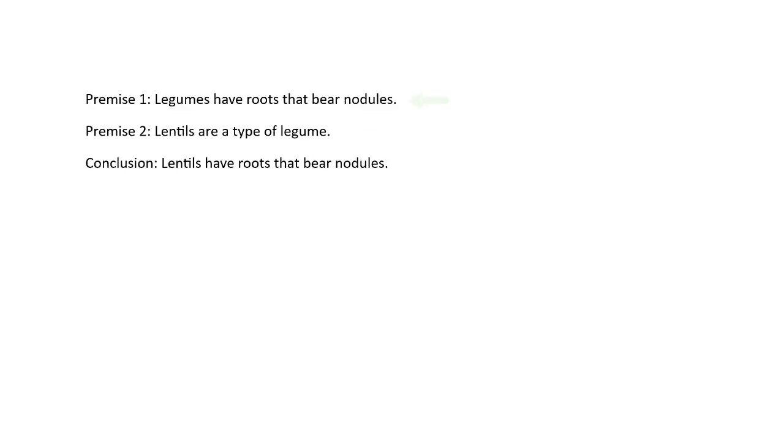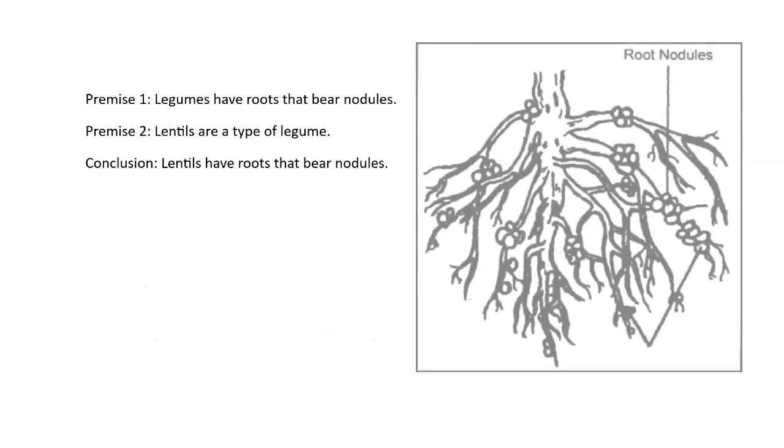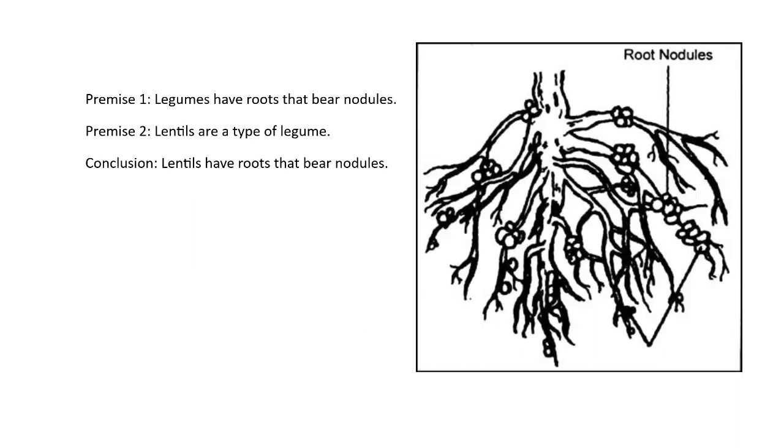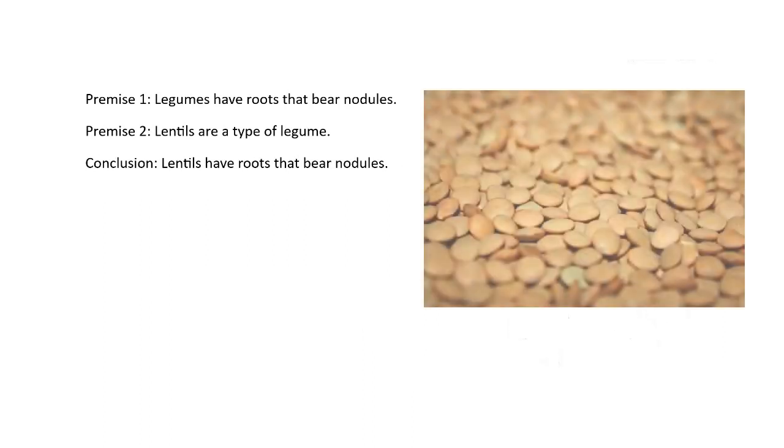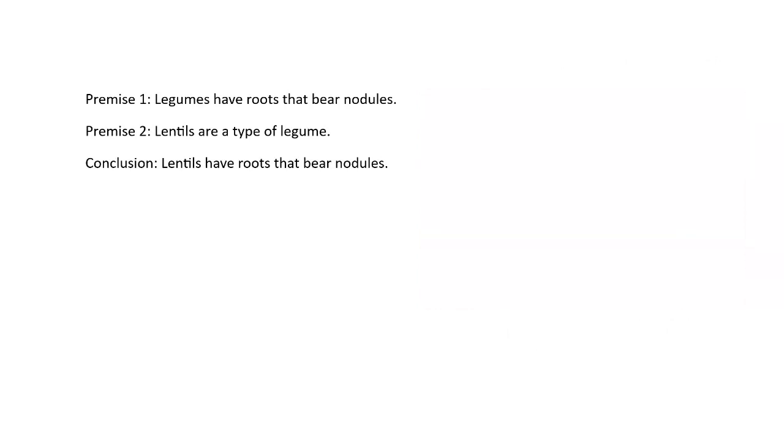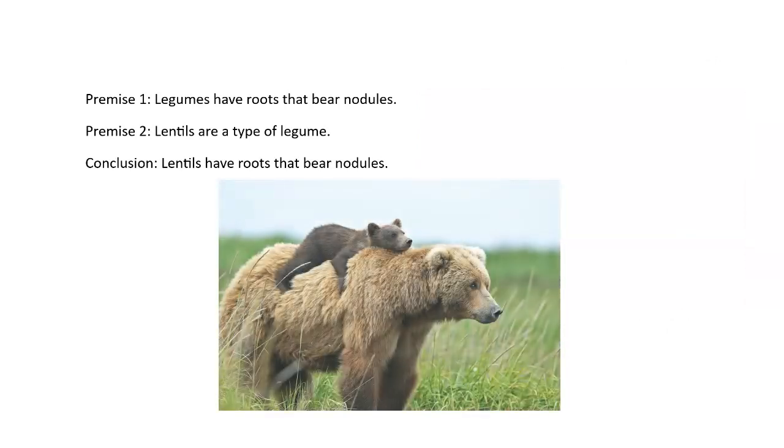We've got three statements here. Two are what we call premises, which are statements that can be either true or false. And we've got a statement which we'll call the conclusion, which if the first two statements are correct, it should logically follow that the last statement is correct. So we have legumes have roots that bear nodules and lentils are a type of legume. So that would logically mean that lentils have roots that bear nodules.